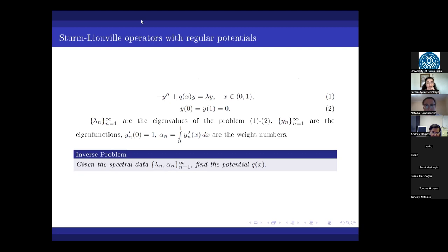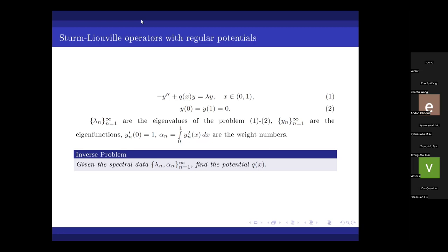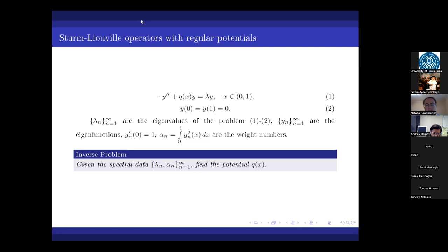We will consider the inverse Sturm-Liouville problem in the following statement. Consider the Sturm-Liouville equation with the Dirichlet boundary conditions. Denote by lambda_n the eigenvalues of this problem and by y_n the corresponding eigenfunctions. If the potential Q is real-valued, then the eigenvalues will be simple, so each eigenvalue has exactly one eigenfunction, and let them be normed by this condition. Then the norms in L2 are called the weight numbers, and the classical inverse problem statement is: given the spectral data, that is the eigenvalues and the weight numbers, one has to find the potential Q.